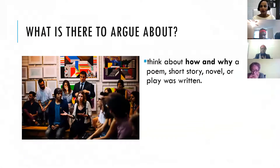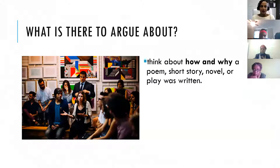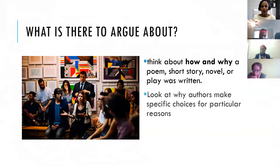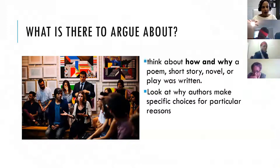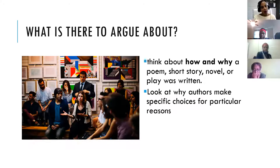Sometimes students ask: what is there to argue about? The story is what it is. Some of the things you want to think about as you do a literary analysis are how and why it was written. You're thinking about why the author makes particular choices with the characters, the setting, and the story. It's not just what, but the why that you're trying to identify — here's why the author does this, here's why the character does this, here's why this matters or how it matters.